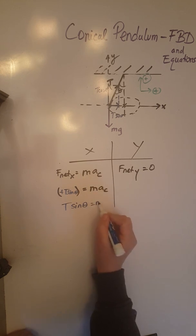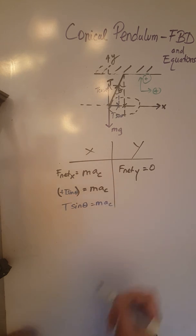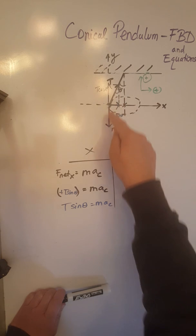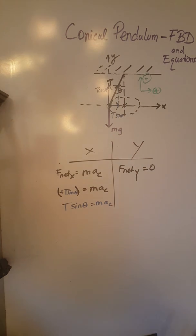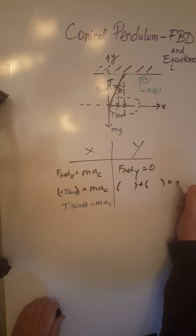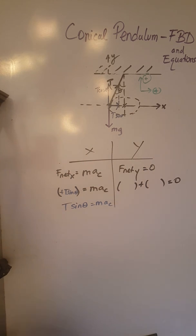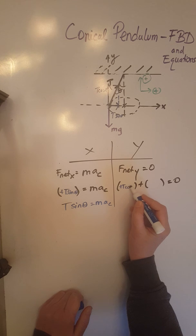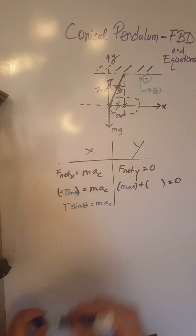For the y, I have two forces on the y. One is positive and the other one is negative. So when I add up those two forces as a vector sum, I need to have a zero since they balance. Let's put in the forces and their direction: positive T cosine theta and negative mg.